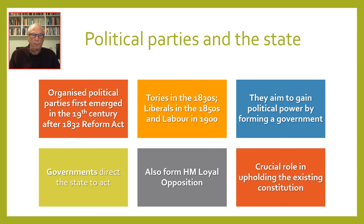The Scottish National Party was formed in 1934 and became the largest party in the devolved Scottish Parliament in 2007, forming a government for the first time. Plaid Cymru, the Welsh nationalist party, was formed in 1924, while the Green Party was established across different countries of the UK from 1990. Later in the course we will examine the role of mainstream political parties in identifying with and supporting the present state. The next session will show how real power is given legal backing through the British constitution.